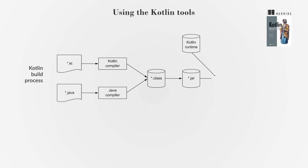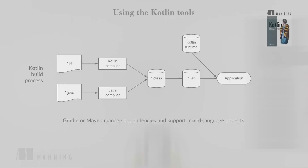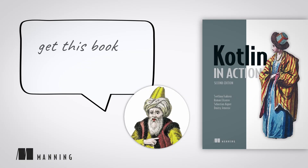Kotlin code can be compiled for the JVM, Android, native platforms, and JavaScript/WebAssembly. Build systems like Gradle or Maven manage dependencies and support mixed language projects. Get this book at Manning.com.